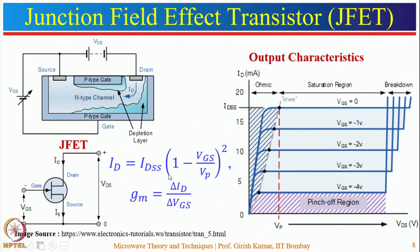BJTs suffer from the minority carrier effect. The next type, the field effect transistor, is a unipolar device where current conduction is due to only one type of charge carrier. In an n-type channel, charge carriers are electrons; in a p-type channel, charge carriers are holes. One commonly used FET at low frequency is the junction field effect transistor (JFET).